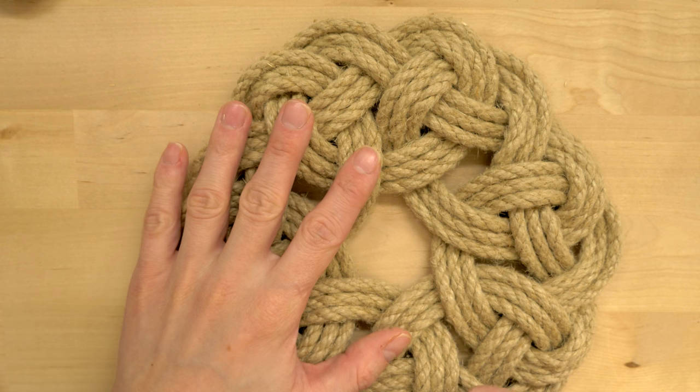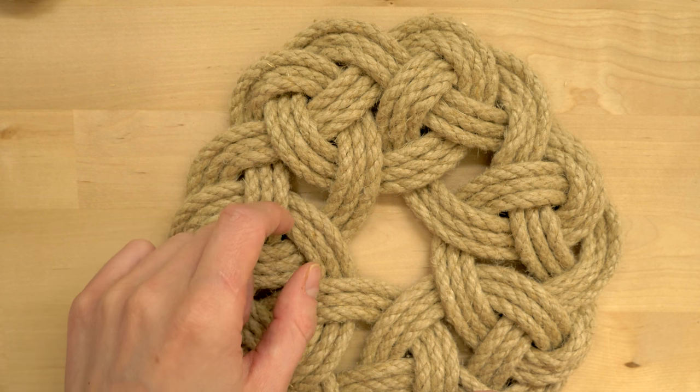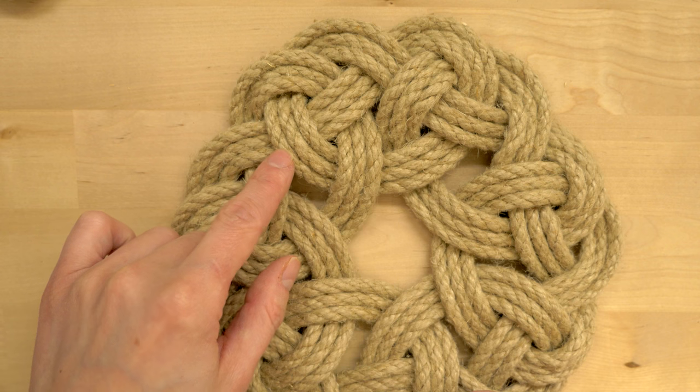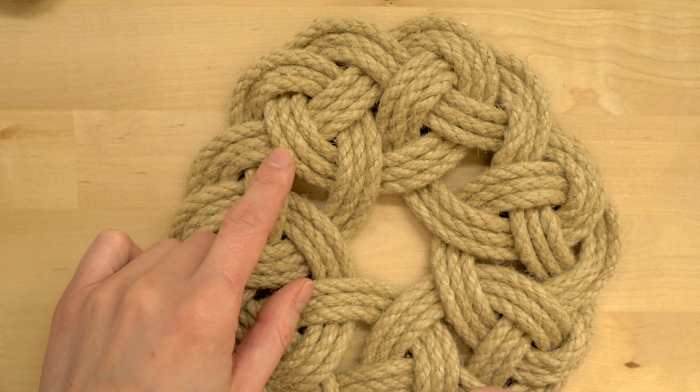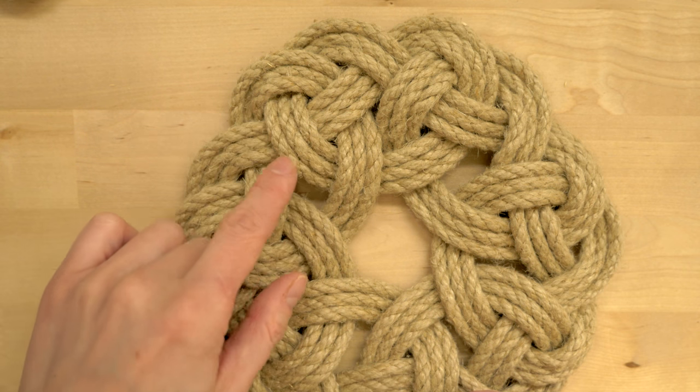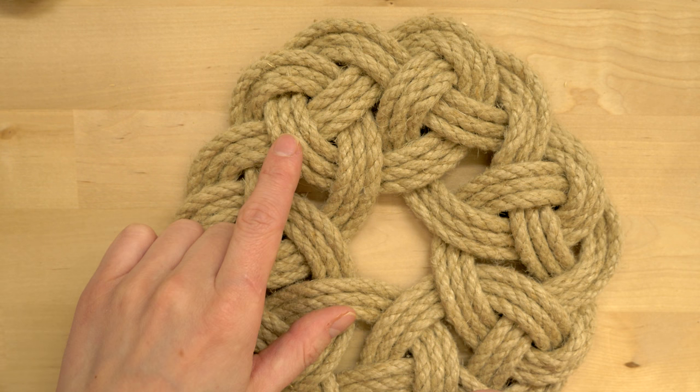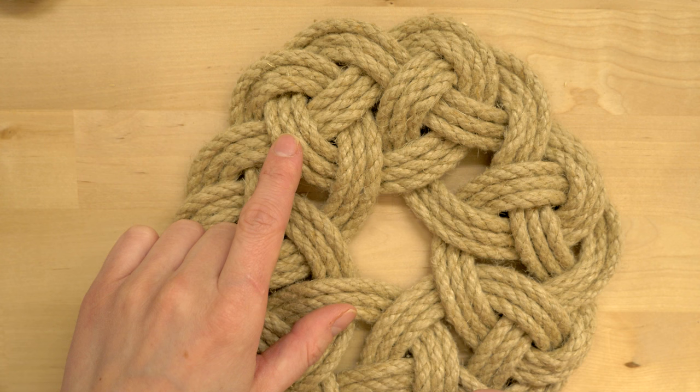This style of mat is best done using natural rope, and for this project I used a quarter inch hemp rope. For this specific mat, which is a 3-pass one, I used about 25 feet of rope.